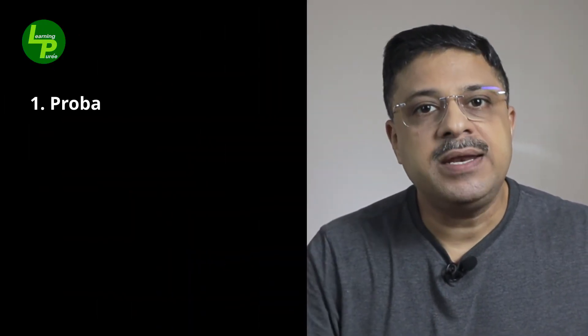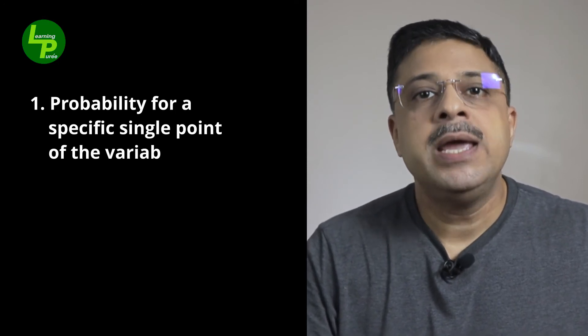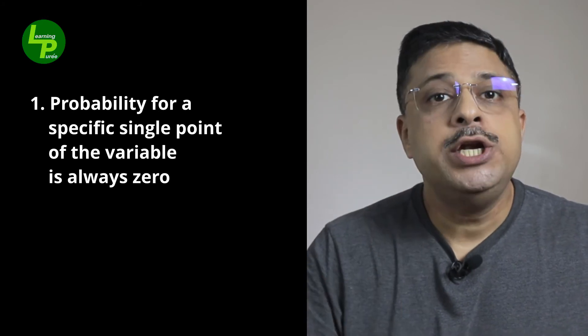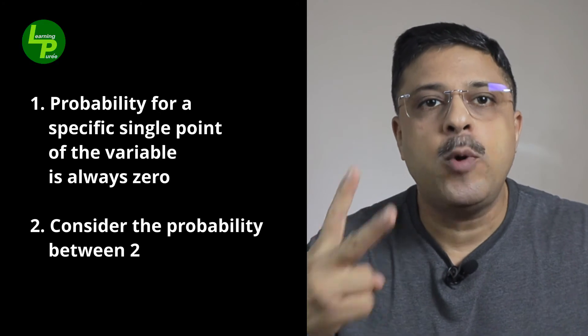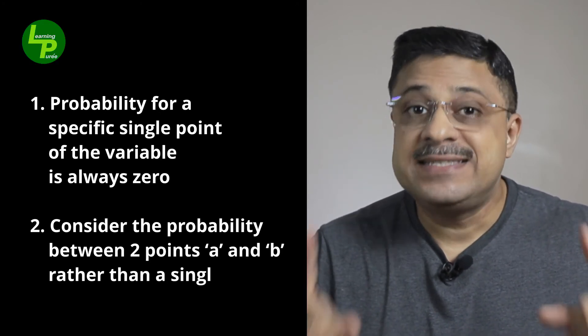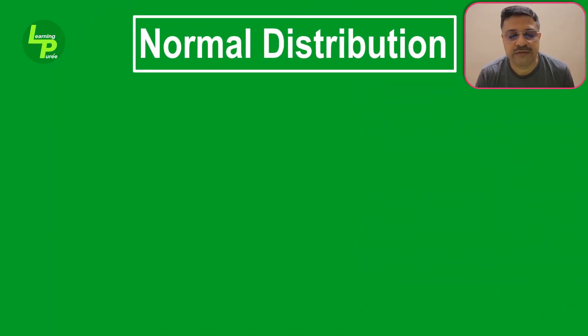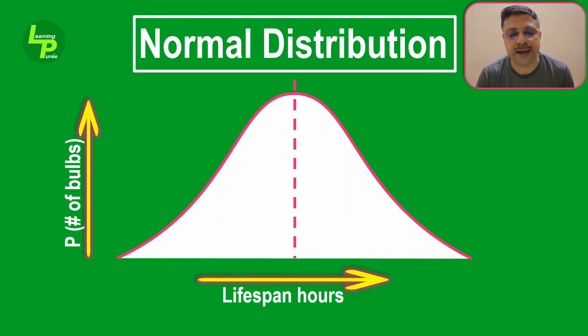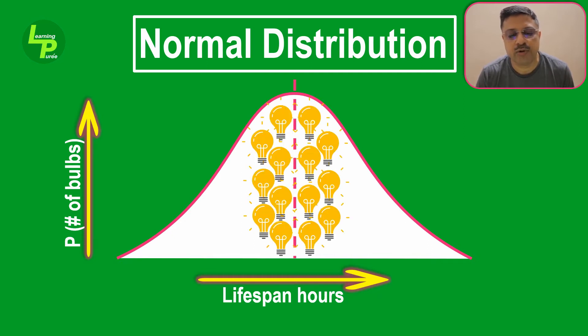To recap from that video, two important points for a continuous probability distribution: first, the probability of a specific value or single point of the variable is always zero; and secondly, due to the previous point, we always consider the probability between two points A and B of the random variable rather than a single point. This probability is denoted by the area under the curve between the two points. Additionally, the height of the curve determines the frequency of bulbs found for each lifespan reading converted to probability. It is quite common to get bulbs with lifespan hours centered around the mean, and relatively low probability to get bulbs with exceptionally low and incredibly high lifespan hours.